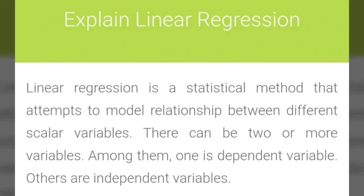Explain Linear Regression. Linear Regression is a statistical method that attempts to model the relationship between different scalar variables. There can be two or more variables among them — one is the dependent variable and the others are independent variables.